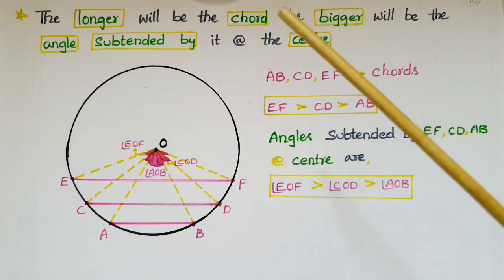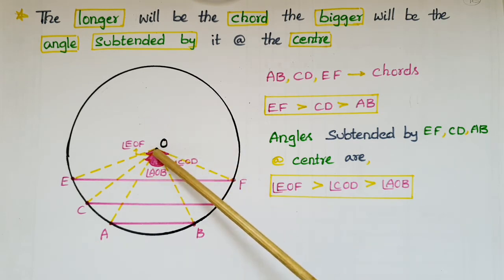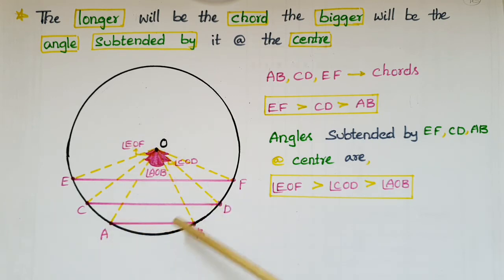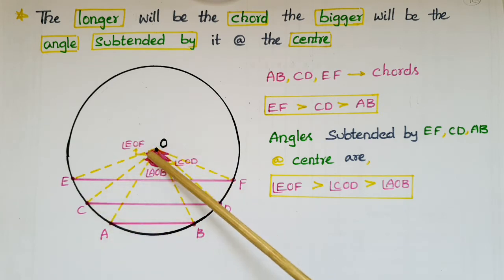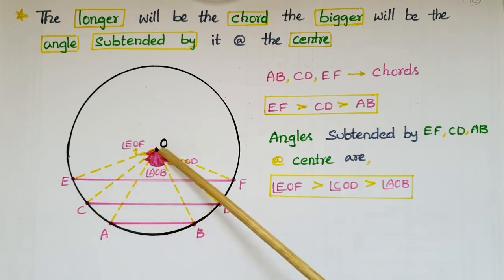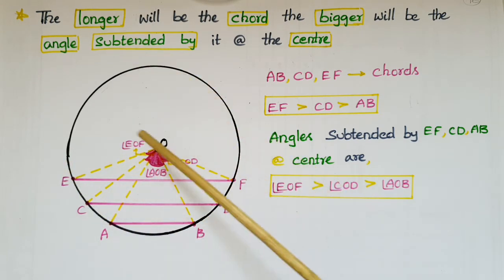Now see this figure — here AB, CD, and EF are different chords of the circle and O is the center. Angle AOB is the angle subtended by chord AB at center O. Angle COD is the angle subtended by chord CD at center O. Angle EOF is the angle subtended by chord EF at center O.